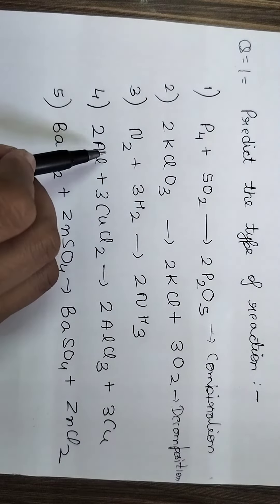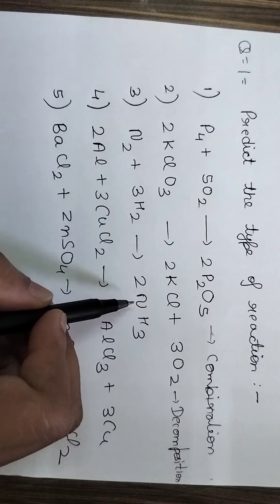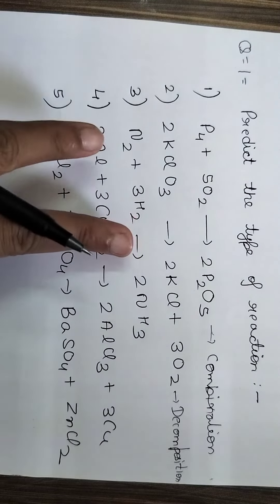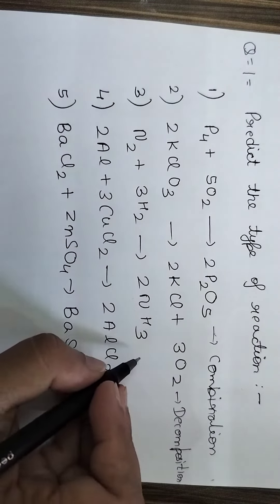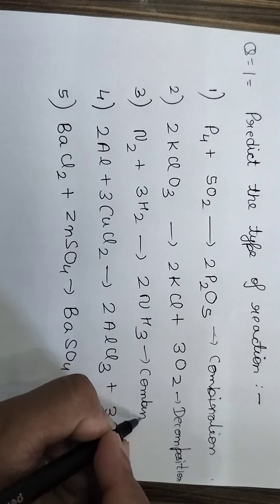Now if you can see the third one, N2 plus 3H2 gives rise to 2NH3. Again, two reactants and one product. Obviously it will be a combination reaction.